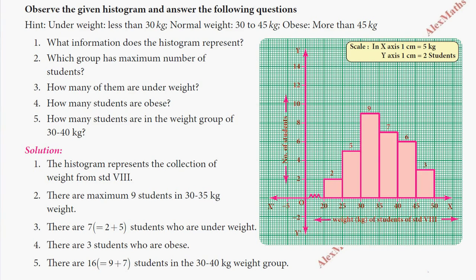Hi students, this is Alex. Here in the problem, observe the given histogram and answer the following questions. The histogram represents the weight of students of standard 8, grouped in different ranges: 20 to 25, 25 to 30, 30 to 35, and so on. For example, in the 20 to 25 kg range, there are 2 students.